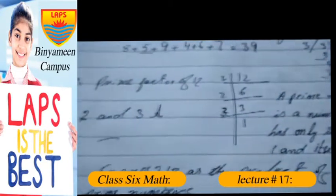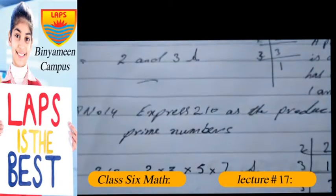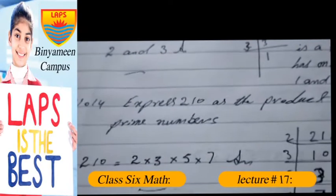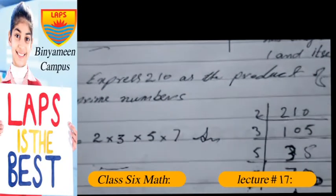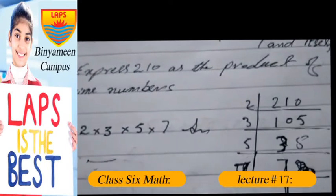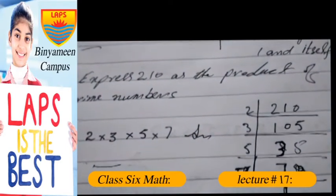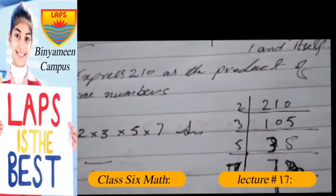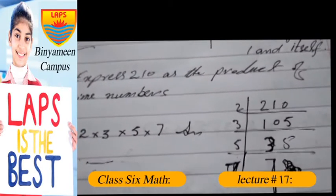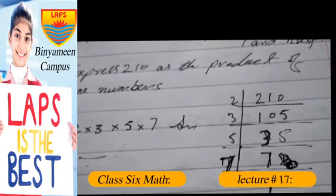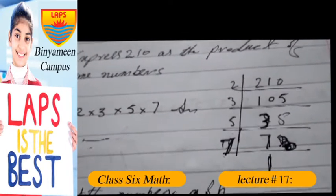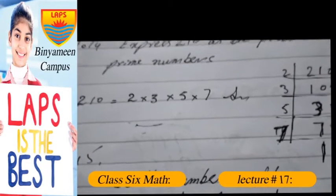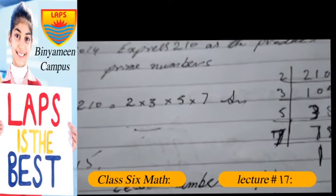Question number 14: express 210 as a product of prime numbers. 2 exactly divides 210, so 2 times 105 is 210. 2 times 5 is 10, 3 times 3 is 9, 3 times 5 is 15, 5 times 7 is 35, 7 times 1 is 7. Now the prime factors of 210 are 2 multiplied by 3 multiplied by 5 multiplied by 7, the product of prime numbers.